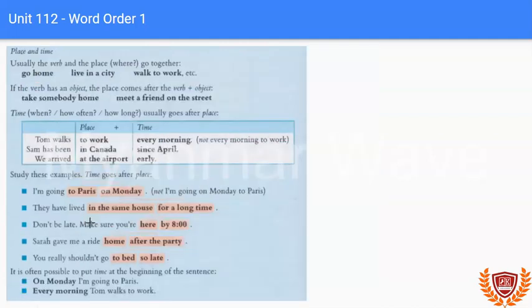What did you eat, the food, in the place? The place and time. Then you want to talk about the typing. Usually the verb and place go together. The verb and place go together.